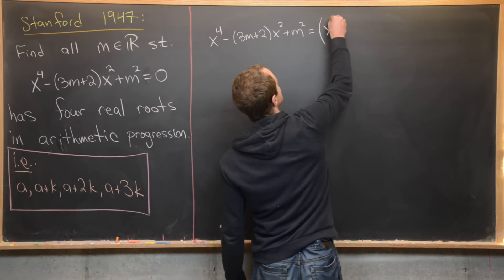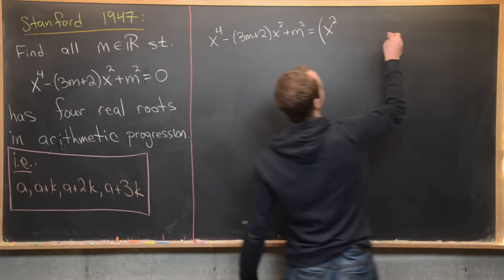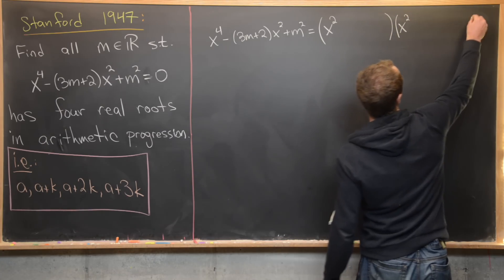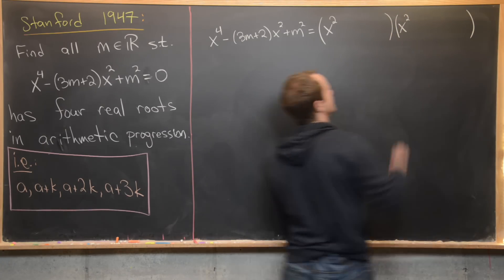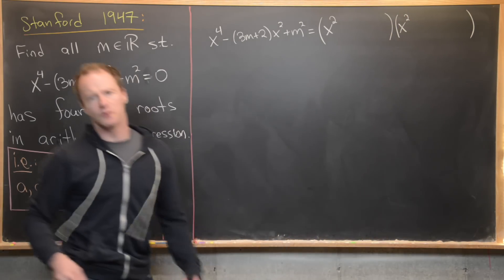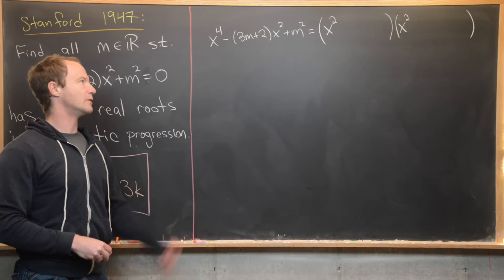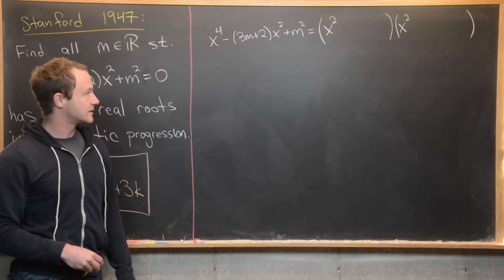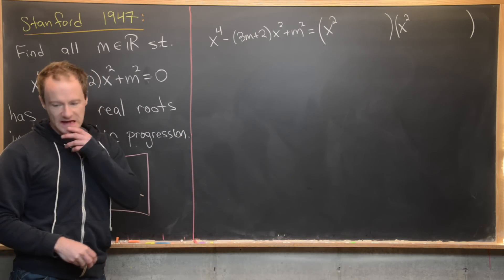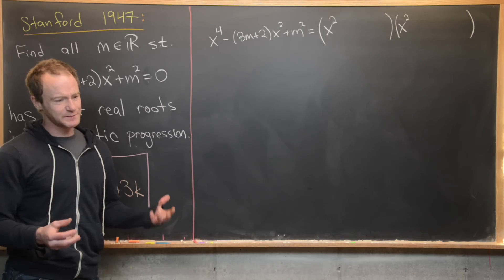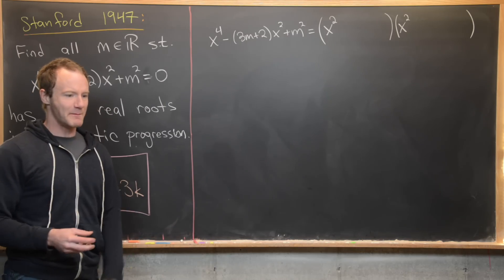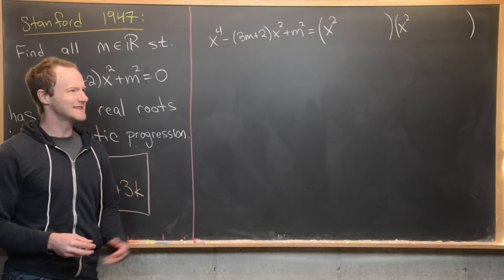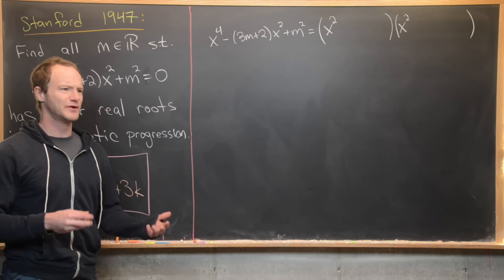The leading term of each quadratic factor must be x². They could theoretically be reciprocals of each other, but we might as well take them both to have leading term x².